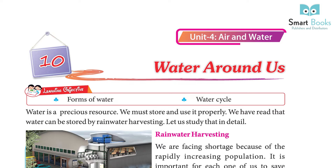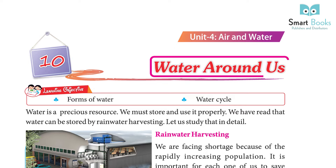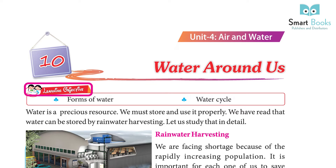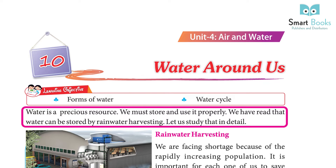Unit 4: Air and Water, Chapter 10: Water Around Us. Learning objectives include forms of water, water cycle, and water as a precious resource. We must store and use it properly. We have read that water can be stored by rainwater harvesting.